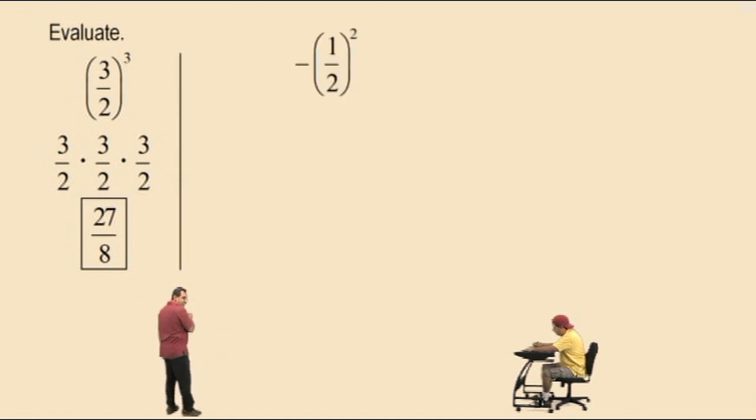Now here it is again. This is read as negative 1 times 1 half squared. Negative 1 half is not in parentheses, right? The 1 half is in parentheses, but it's not a negative 1 half in parentheses. What I'm trying to say is the negative sign is outside of the parentheses. The base is 1 half. The exponent is 2.